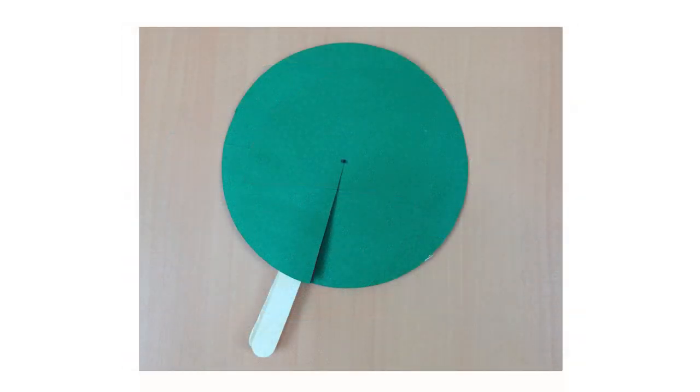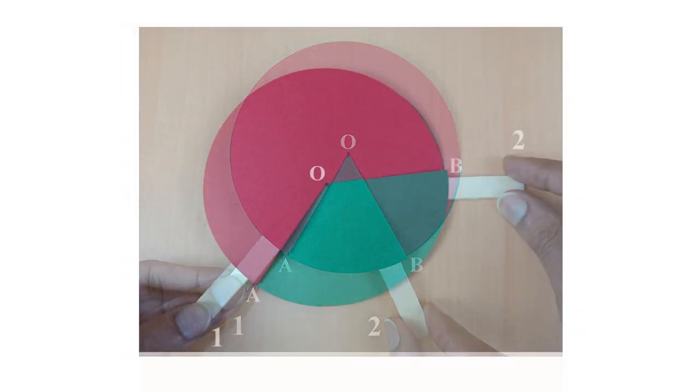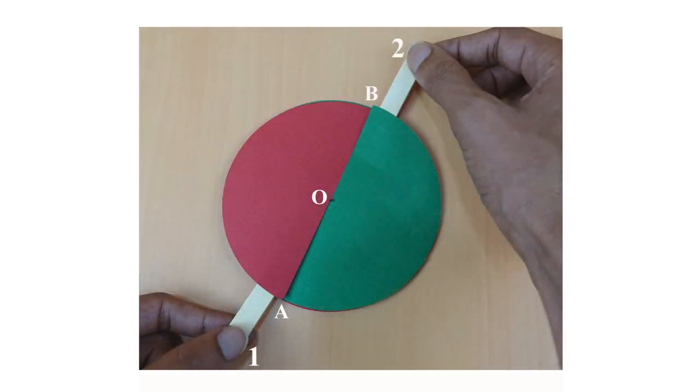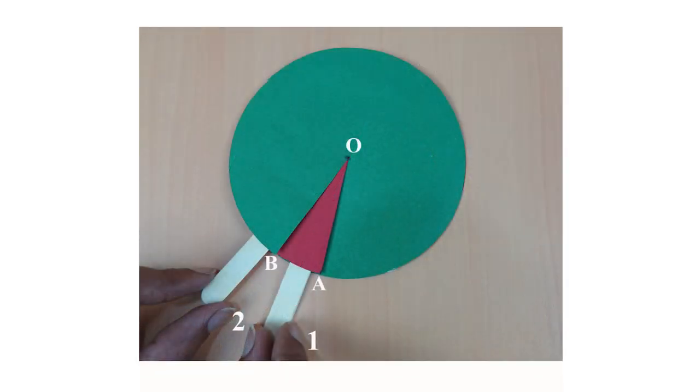Now, rotate the circles using the ice cream sticks to obtain various angles. This small model was prepared in a group of 5, and I gave certain time to different groups to observe and discuss.